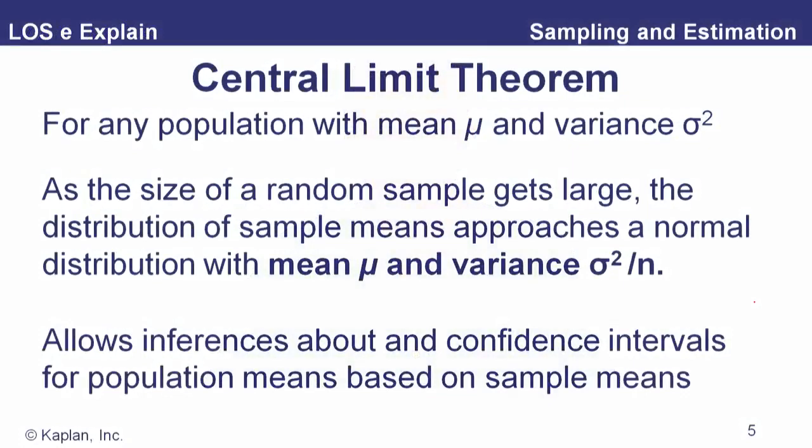An important part of sampling and making inferences about population parameters is the central limit theorem. It says that for any population with a mean mu and a variance sigma squared, as the size of the random sample gets large, the distribution of sample means approaches the normal distribution. The mean of those sample means will equal the population mean, but with less variance — specifically, the population variance divided by the sample size n.